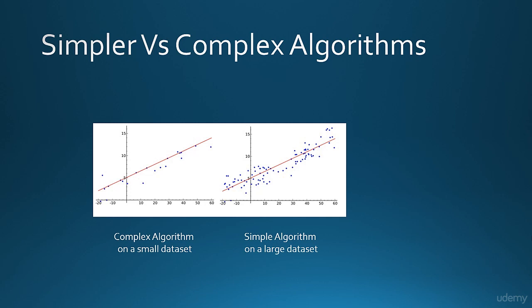What it means to have a complex algorithm is that the algorithm has to be sensitive towards the weak correlations and should be able to account for them in calculating the final results. In order to have this sensitivity, it gets really complicated to properly weigh and assess the correlation as the data is relatively small to work with. So the algorithms get complex when there is small data to work with.